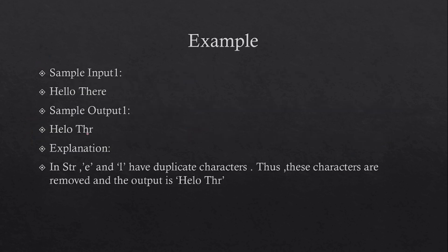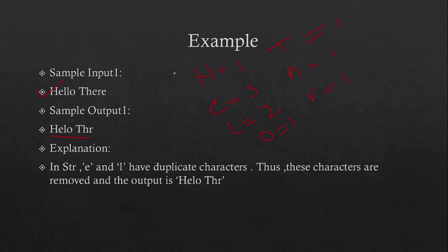Let's see the first example: 'Hello there'. You will get a specific output. If you calculate the number of occurrences of each character: capital H = 1, small e = 3, small l = 2, small o = 1, capital T = 1, small h = 1, small r = 1. Note that small h and capital H are treated as different characters.